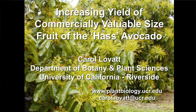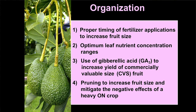We're going to talk about increasing the yield of commercially valuable sized fruit of the Hass avocado. I've organized my presentation into four parts: the proper timing of fertilizer applications to increase fruit size, the new optimum leaf nutrient concentrations, the use of gibberellic acid (GA3) to increase yield of commercially valuable sized fruit, and pruning to increase fruit size and mitigate the negative effects of a heavy on-crop year.